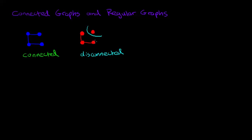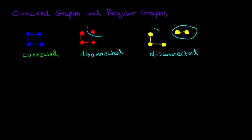But it doesn't have to be a single vertex that's by itself. Here's another example of a disconnected graph. Notice that in this case we don't have a single vertex that's all by itself, but we do have two pieces of the graph — a piece over here and a piece over here. There's no way to get from one of the vertices in one piece to the other side in a different piece. So that's what we mean by disconnected.